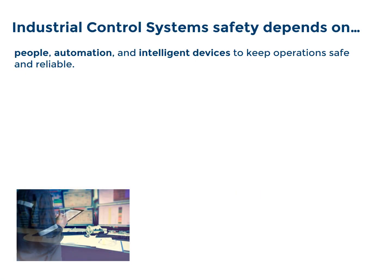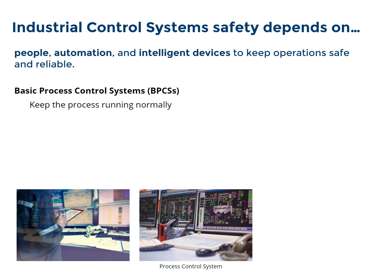Industrial control systems depend on people, automation, and intelligent devices to keep operations safe and reliable. The basic process control system, or BPCS, is the main computer system of the operating process. It receives information about the process — including pressure, temperature, flow, and level from transmitters — and transmits signals to manipulate control valves to ensure the system continues to operate under desired conditions. You can think of it like the human body: when you eat something, you don't think about how to digest it. Your body's basic process control system knows where to send the food and what chemicals to add, all within operational limits — unless you get indigestion.